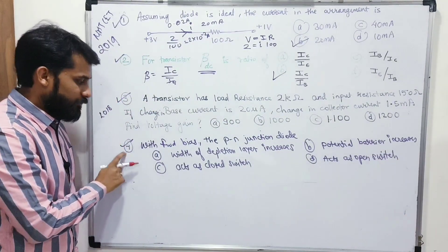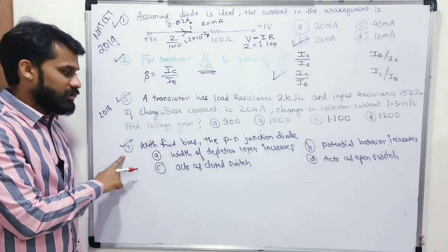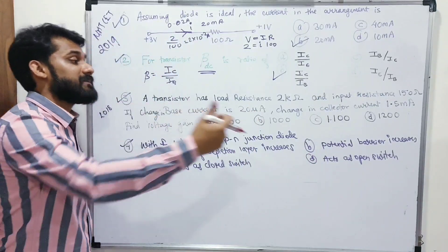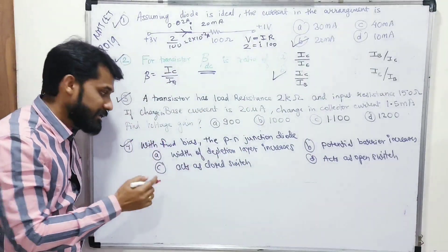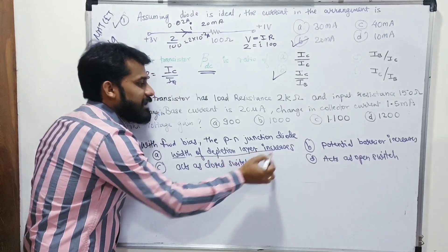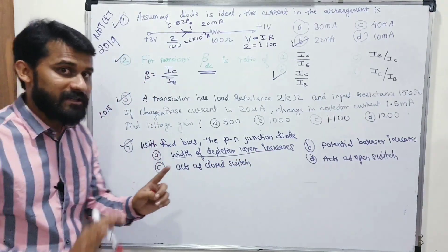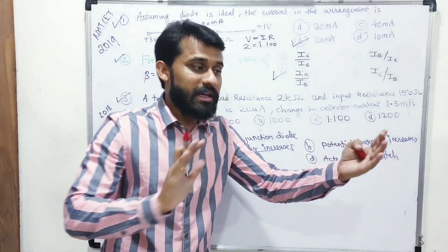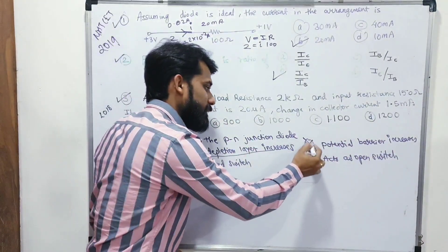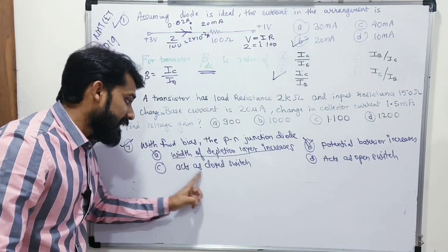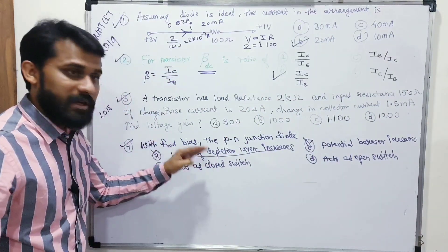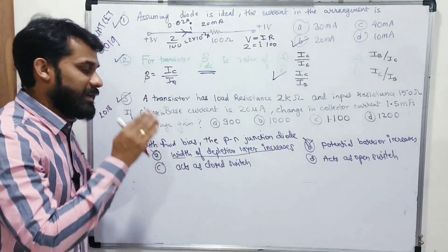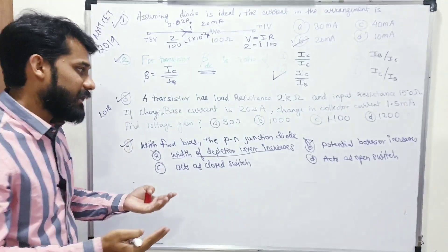Questions from 2018 CET: a theory question asks what happens in a PN junction diode with forward bias. In forward bias, the depletion layer decreases (not increases), the potential barrier decreases (not increases), and the diode acts as a closed switch — as a very good conductor. The correct answer is that it acts as a closed switch.